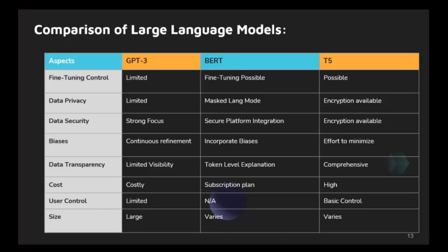Data transparency refers to whether the LLM provider is transparent about the data used to train and fine-tune the LLM. If the provider is transparent about the data, users can be more confident that their data is being used responsibly. The data privacy of LLMs varies depending on the LLM provider. Some LLM providers such as OpenAI have more control over the fine-tuning process and use encrypted data. Other LLM providers such as Google have less control over fine-tuning and do not use encrypted data as well.